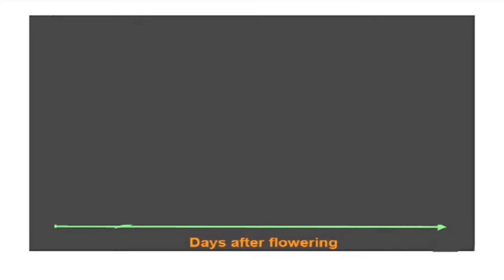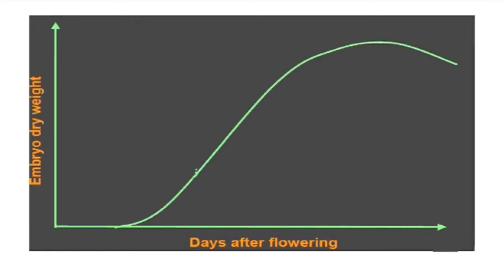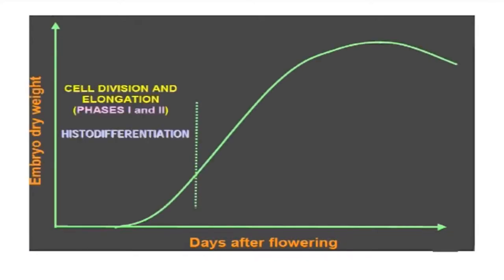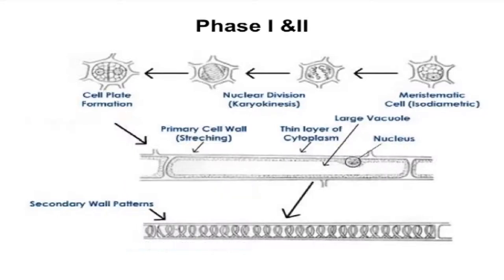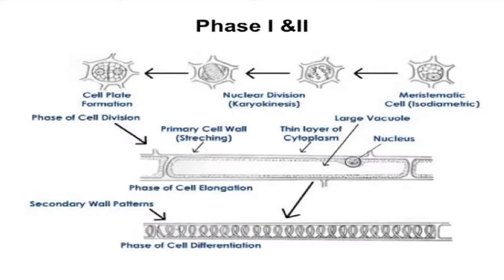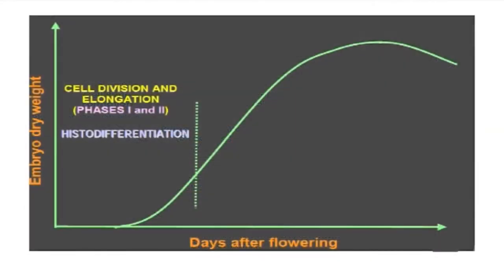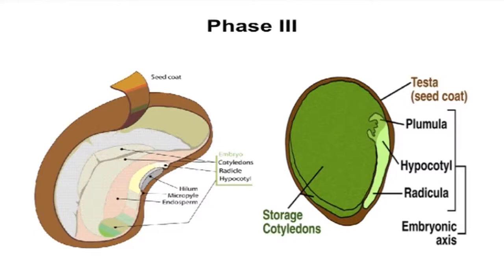The phases of seed development can be divided into four. Phase one and two account for cell division and expansion with reserve accumulation. In these phases, cell differentiation, formation of seed primordia, and embryo cell division occur. During phase three, the seed size increases as the embryo receives food from the mother plant. Seed moisture is high, accounting for high metabolic activity in the developing seed.